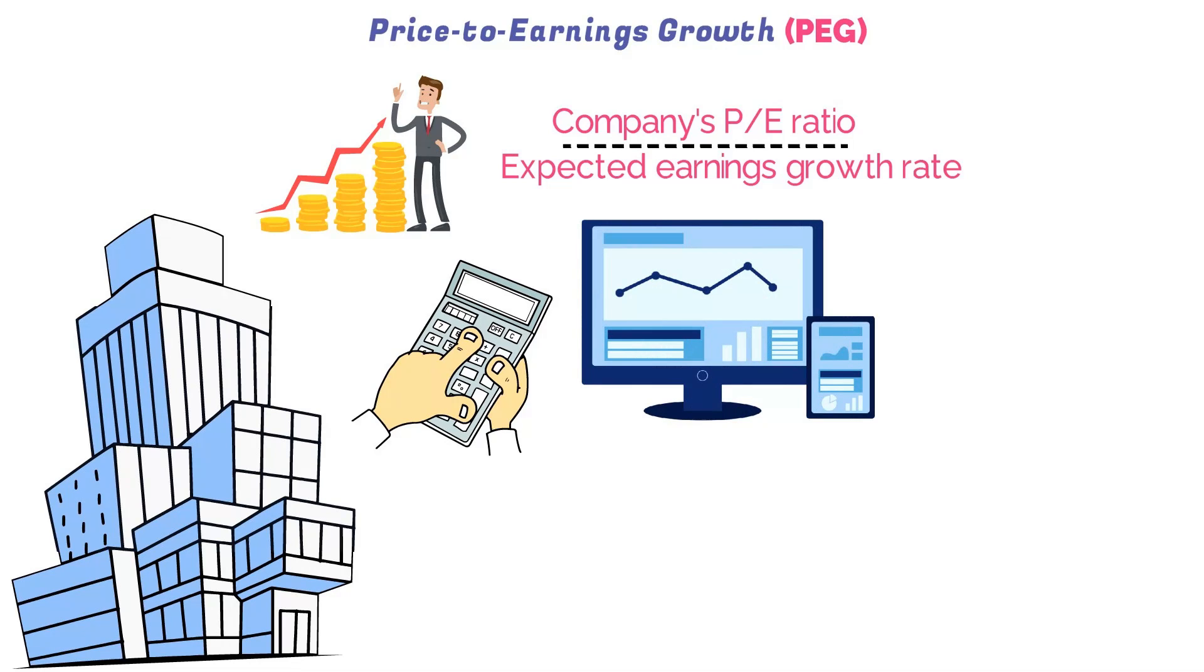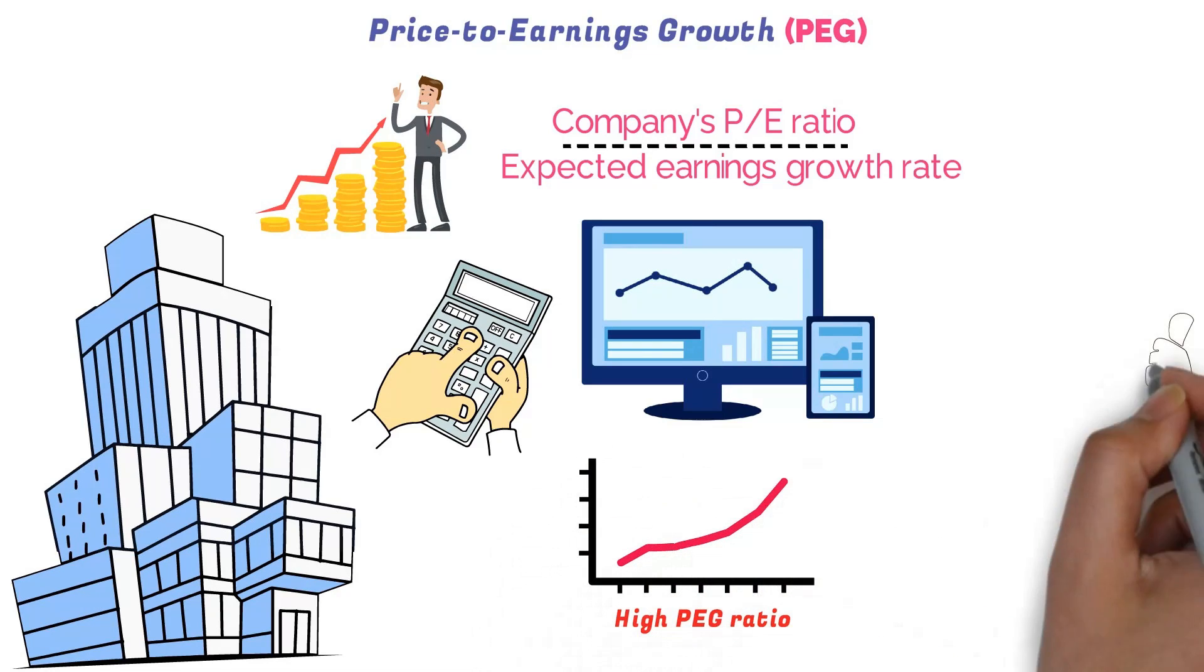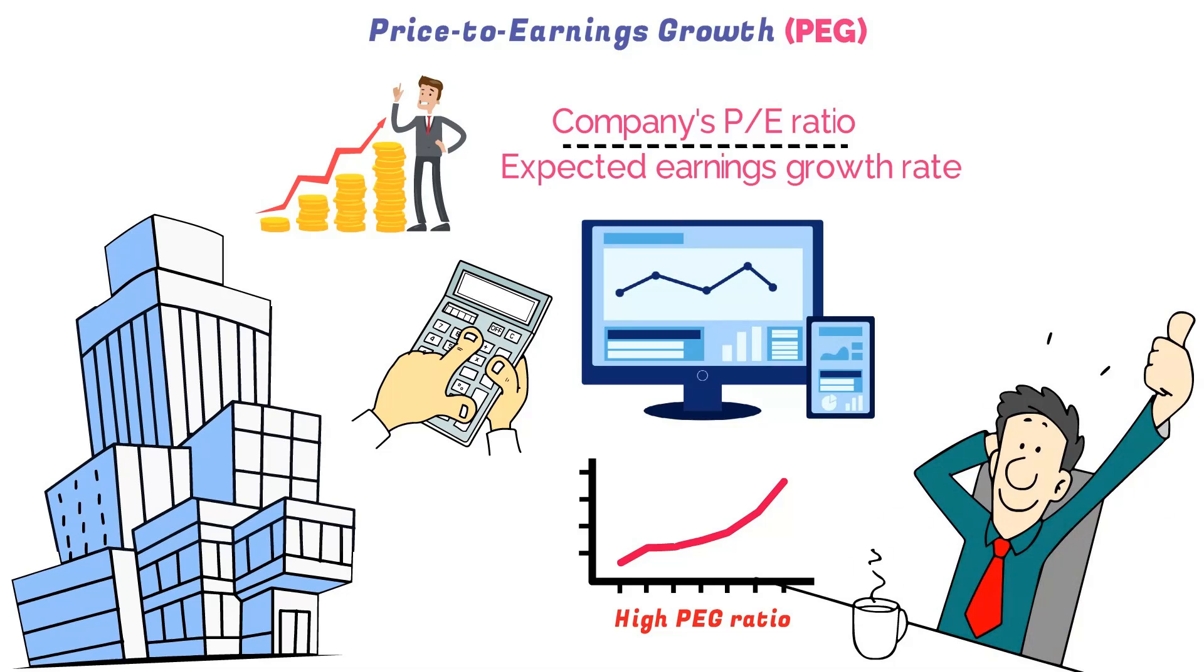A low PEG ratio can indicate that a company's stock is undervalued relative to its earnings growth potential, while a high PEG ratio may suggest that a company's stock is overvalued.